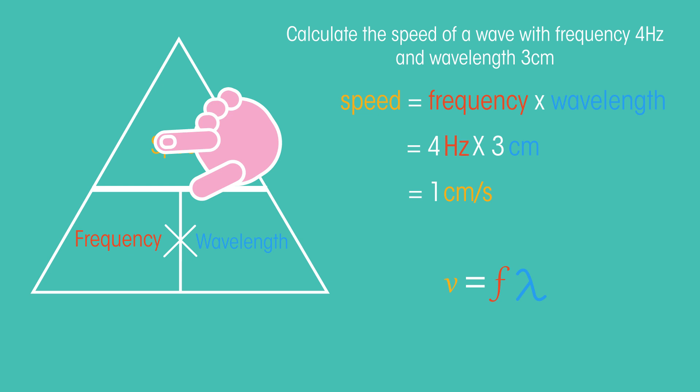Look at the units. The frequency is measured in Hertz, which is a measure of per second, and the wavelength here is in centimeters. So the speed must be in centimeters per second.